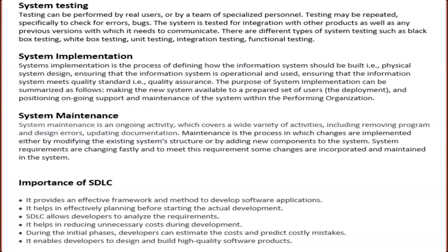System maintenance is an ongoing activity that covers a wide variety of activities including removing program and design errors and updating documentation. Maintenance is the process in which changes are implemented either by modifying the existing system's structure or by adding new components. System requirements change rapidly and to meet these requirements, changes are incorporated and maintained in the system.